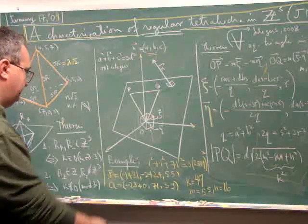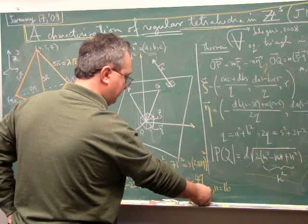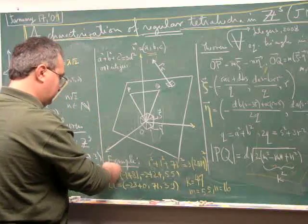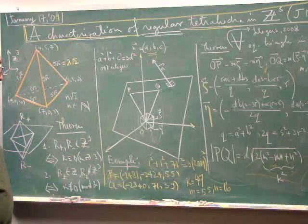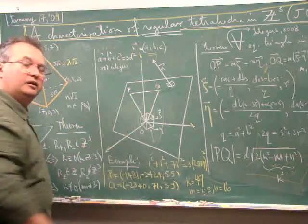One can take m and n here appropriately to get m = 55 and n = 16, and get points P and Q with integer coordinates, and check that this together with the origin forms an equilateral triangle.